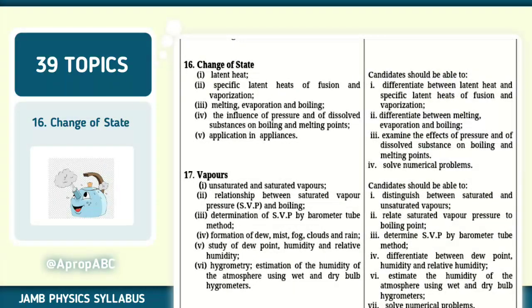Number 16, we have change of state. Latent heat, specific latent heat of fusion and vaporization. Melting, evaporation, and boiling. The influence of pressure on melting point. Applications in appliances. You should be able to solve numerical problems on them. Note the difference between melting, evaporation, and boiling. Difference between latent heat and specific latent heat of fusion and vaporization and things along that line.